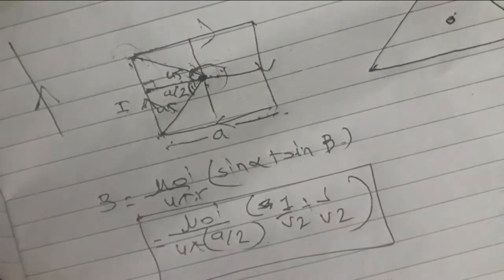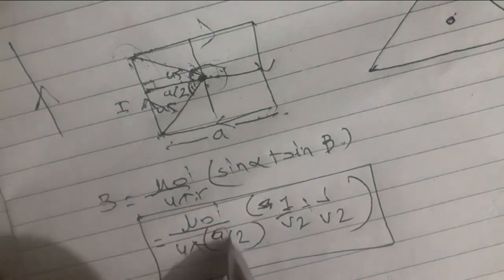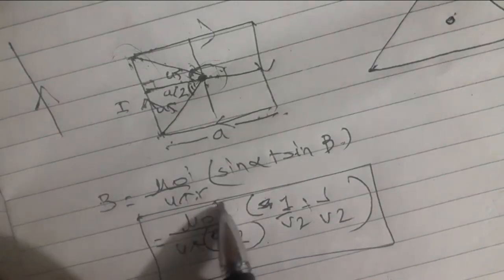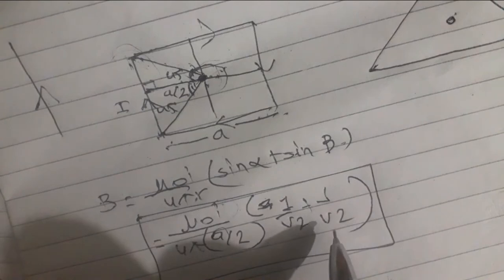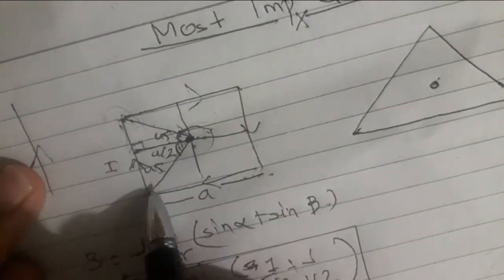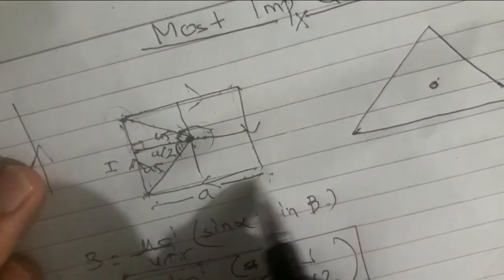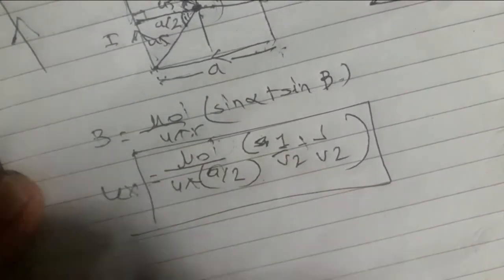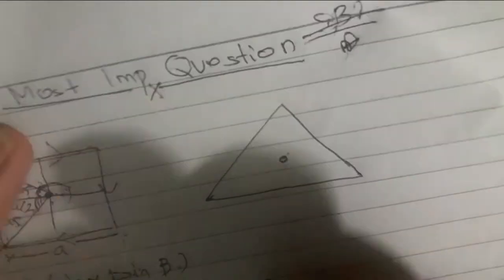This is one side — one straight wire. When we have 4 such sides, we multiply by 4. Similarly, let's move to the triangle case.